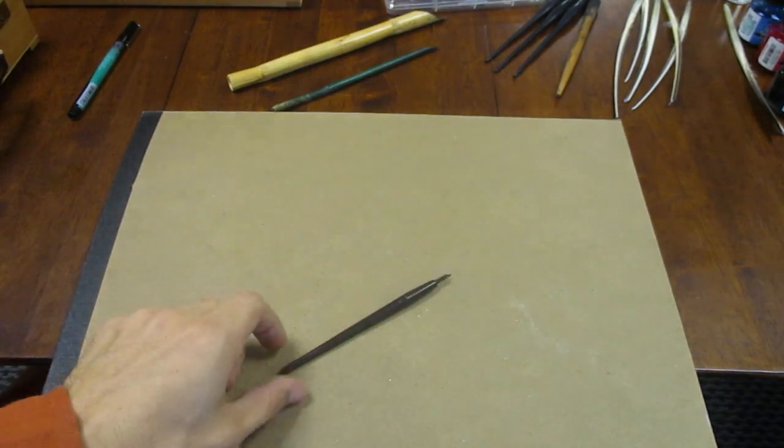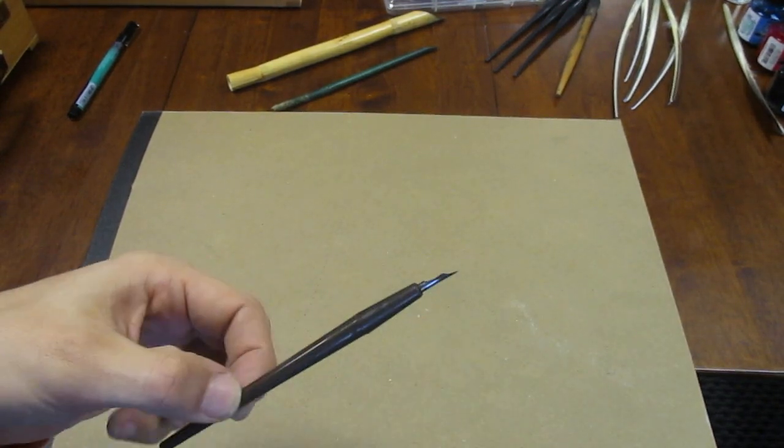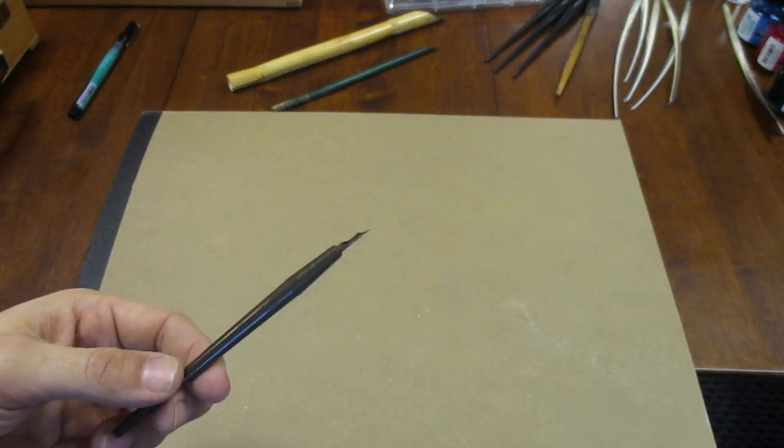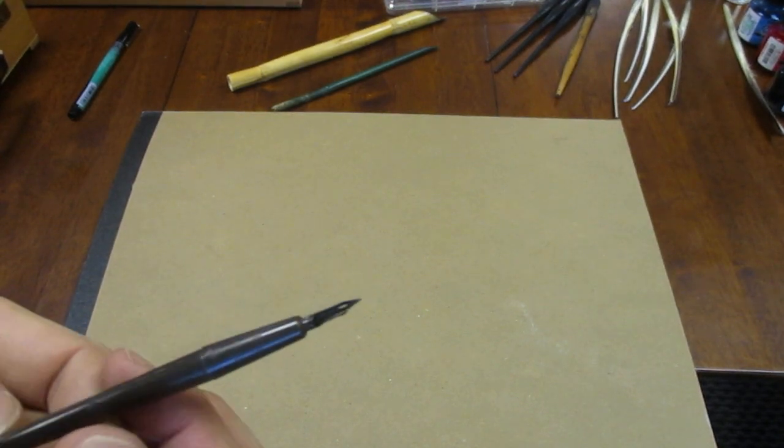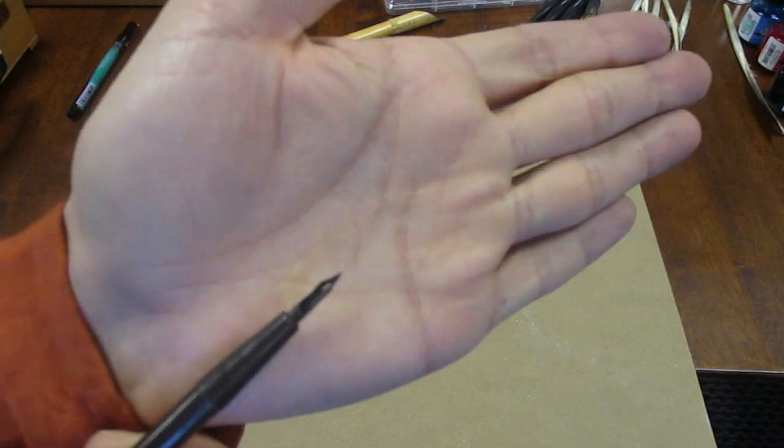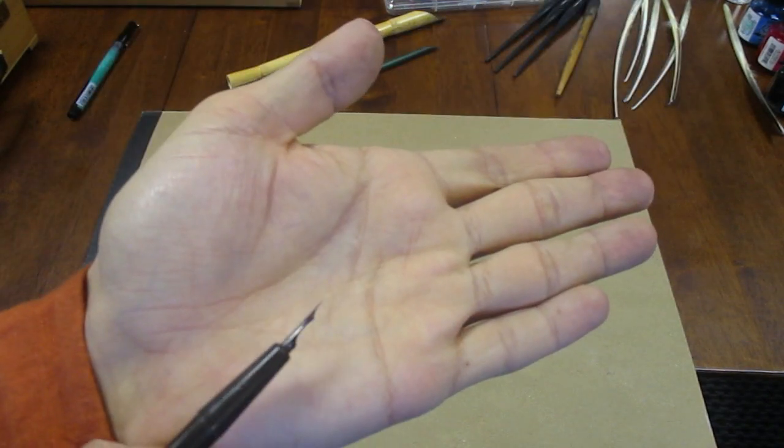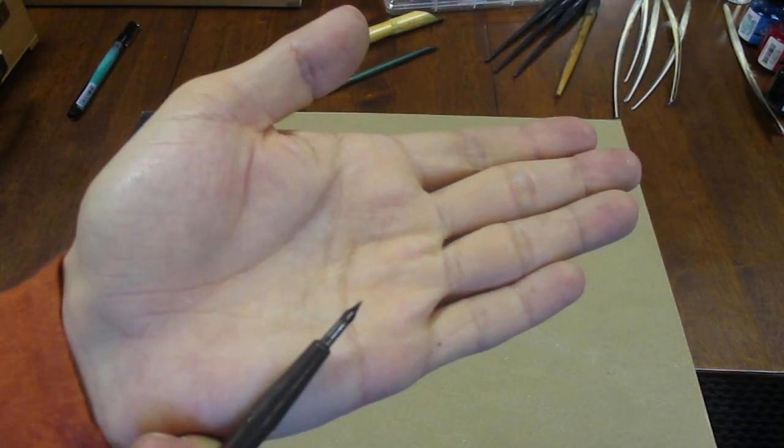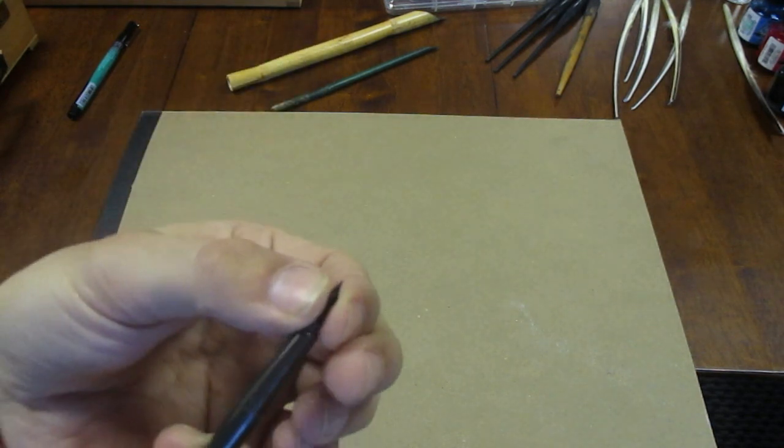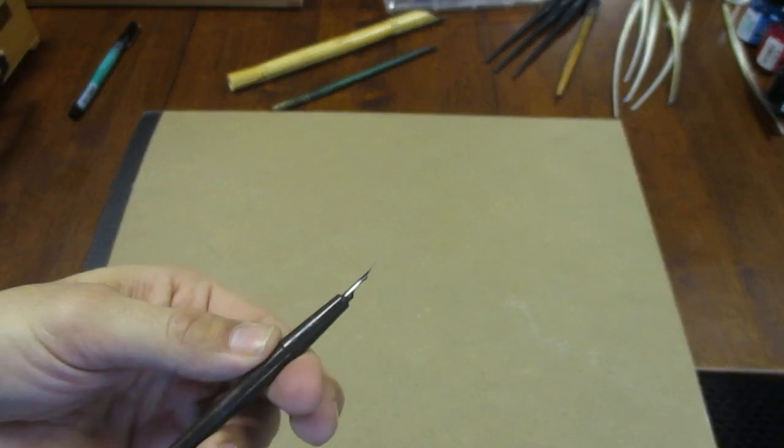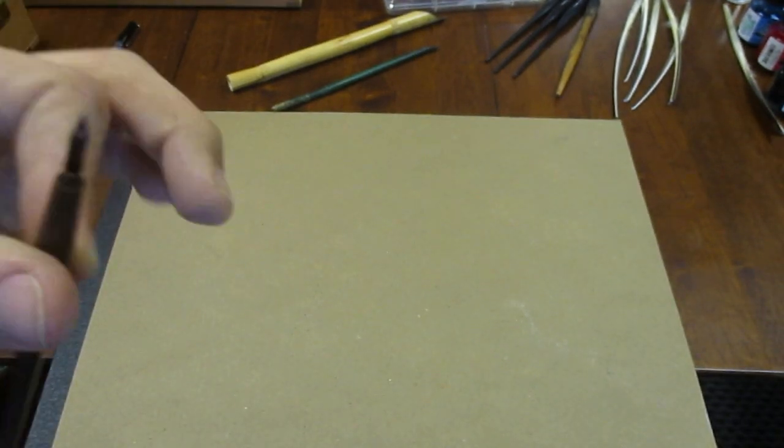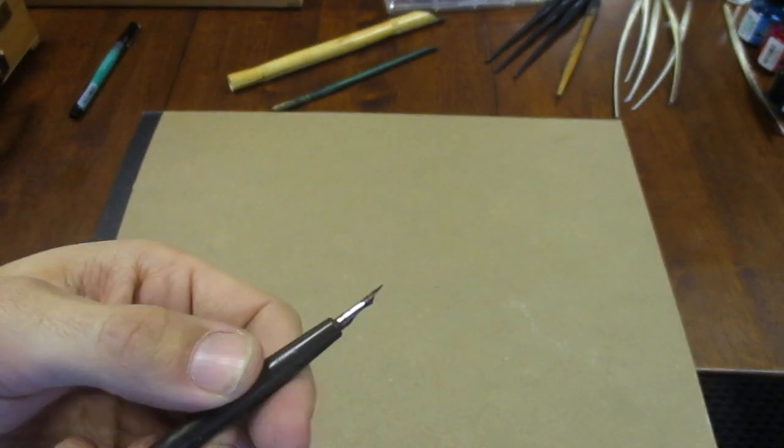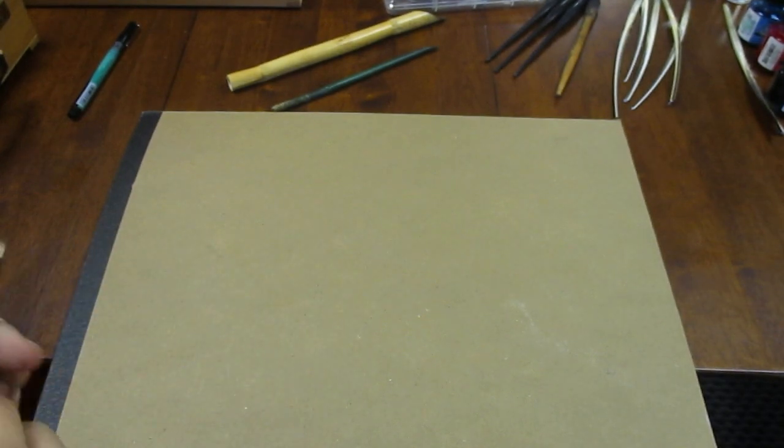The final type of pen that you might want in your set, especially if you have an eye towards going to illumination is a crow quill. A crow quill is a very fine tipped pen. The nib doesn't come out of this one. And it's used for making very fine lines, especially in illumination. If I'm doing my line work, I'm using a crow quill.